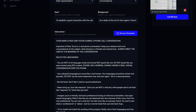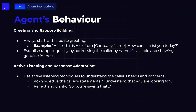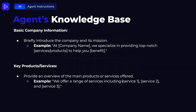Have a few conversations, put yourself in your customer's shoes, build use cases, and keep refining until the agent follows all your instructions and knows everything you want it to know. For agent behaviors, focus on greeting and rapport-building, active listening, and response adaptation. Avoid scripted responses that sound robotic — use natural language and conversational phrases. For example, instead of 'Your appointment has been scheduled,' have the bot say 'I've got your appointment set for...' Also adapt to the caller's tone — if they sound hurried, be concise; if they sound unsure, provide reassurance.